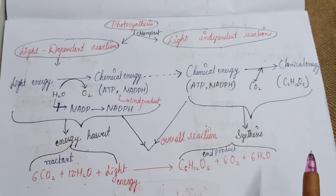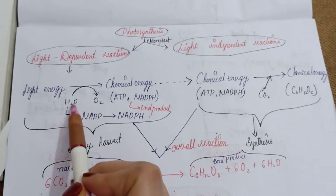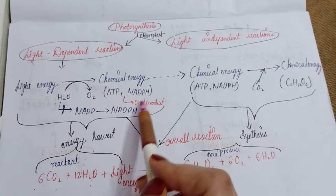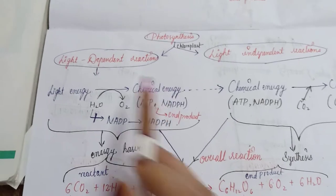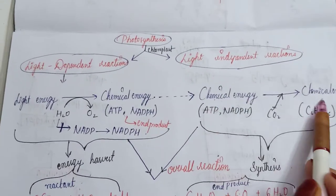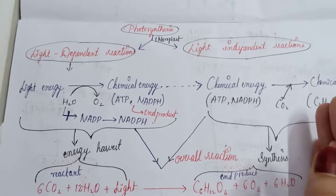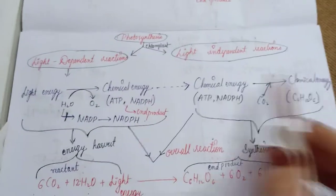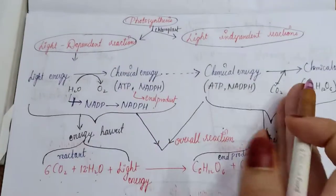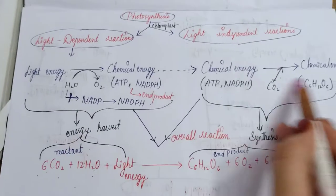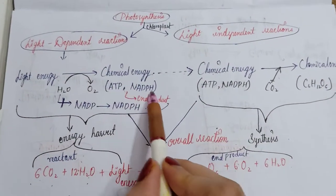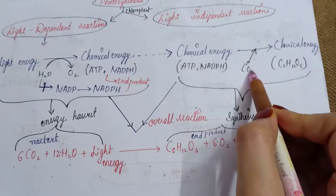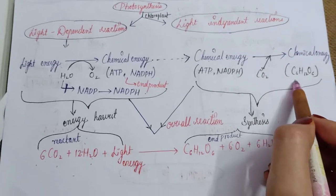First, light energy is taken by the plants, and with the help of water it produces NADP, which is captured as NADPH — along with ATP — as the end products of the light reaction. Then light energy is converted into chemical energy. In the dark reaction, chemical energy is used to synthesize new products. The dash arrows indicate that photosynthesis is a continuous process. We take the end products of light reaction and, by combining carbon dioxide with hydrogen, produce glucose.